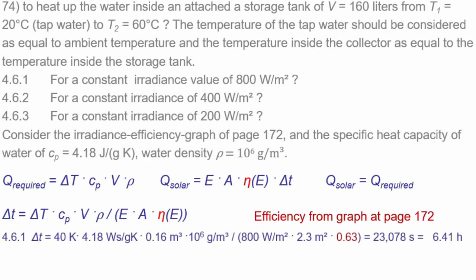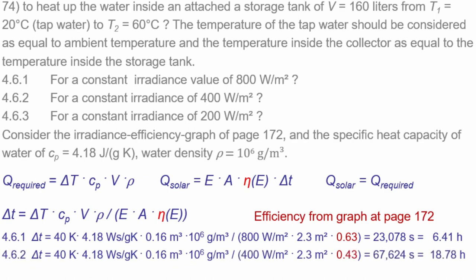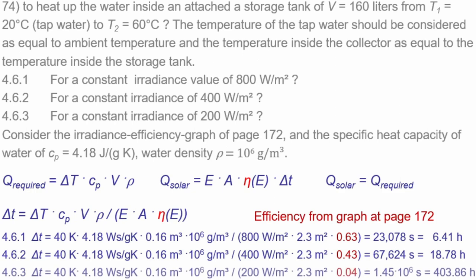From the graph, at 800 W/m² the efficiency is 62%, giving a heating time of 23,078 seconds, or about 6.41 hours. At 400 W/m², efficiency is reduced, and it takes almost three times as long. At 200 W/m², efficiency drops to only 4%, and heating takes 400.86 hours — nearly 14 days.